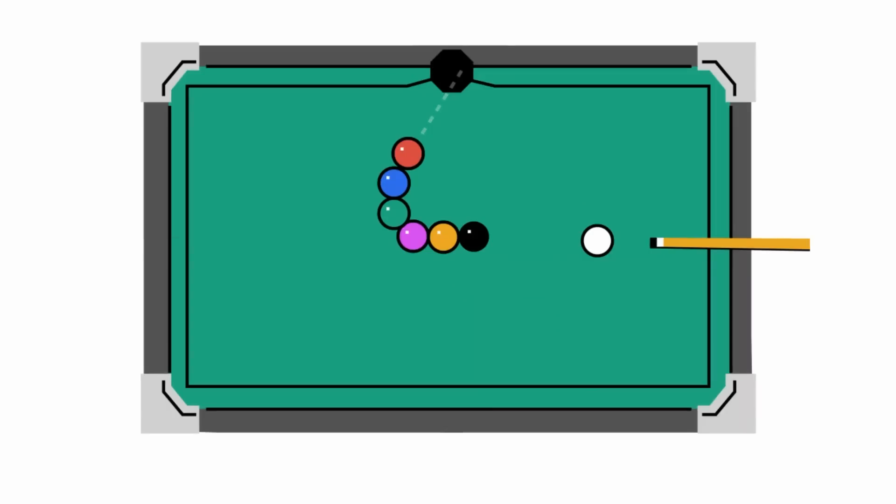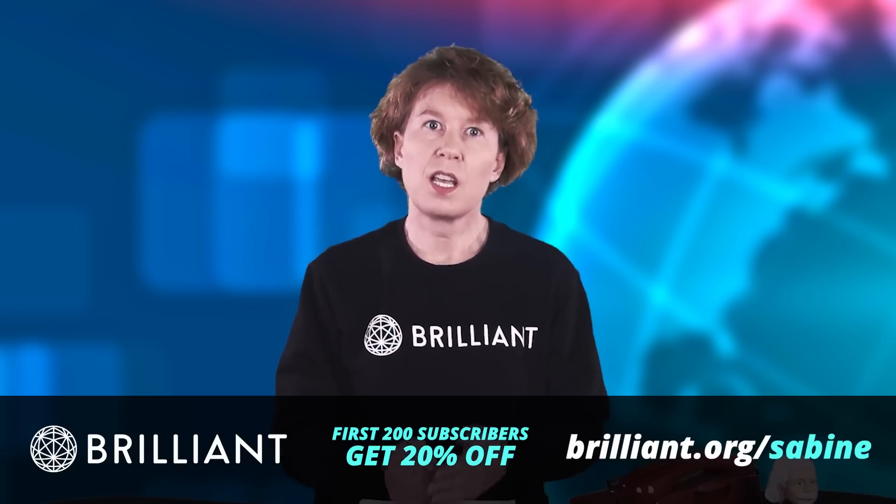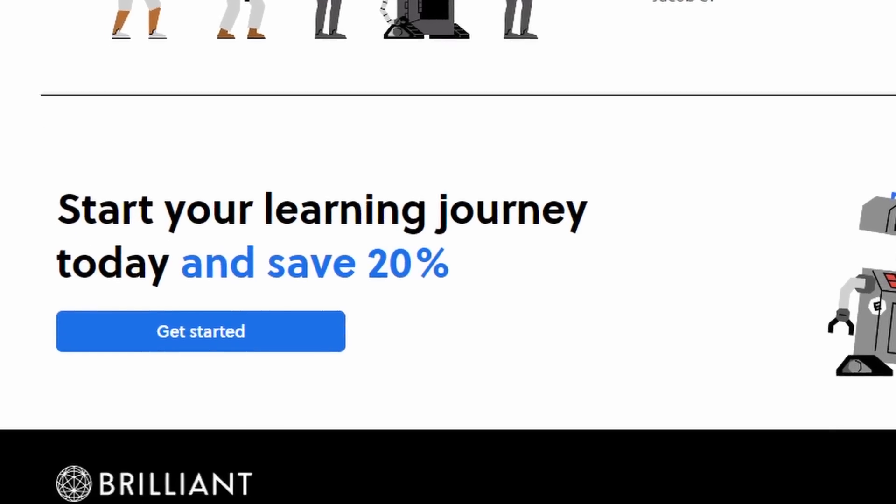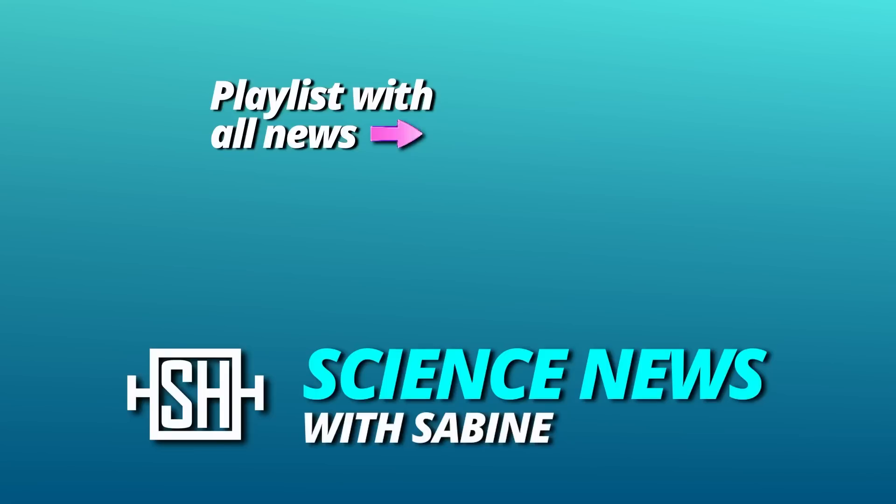All courses on Brilliant come with interactive visualizations and follow-up questions. It's really an easy and fun way to learn something new. If you want to try it out for free, use our link brilliant.org slash sabine. First 30 days are free, and the first 200 of you to use this link will get 20% off the annual premium subscription. Thanks for watching, see you tomorrow.